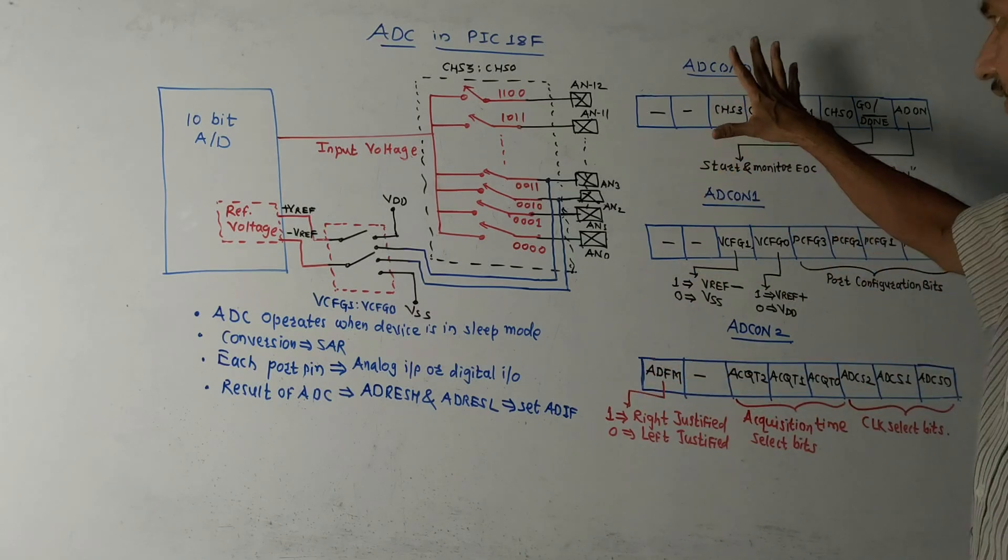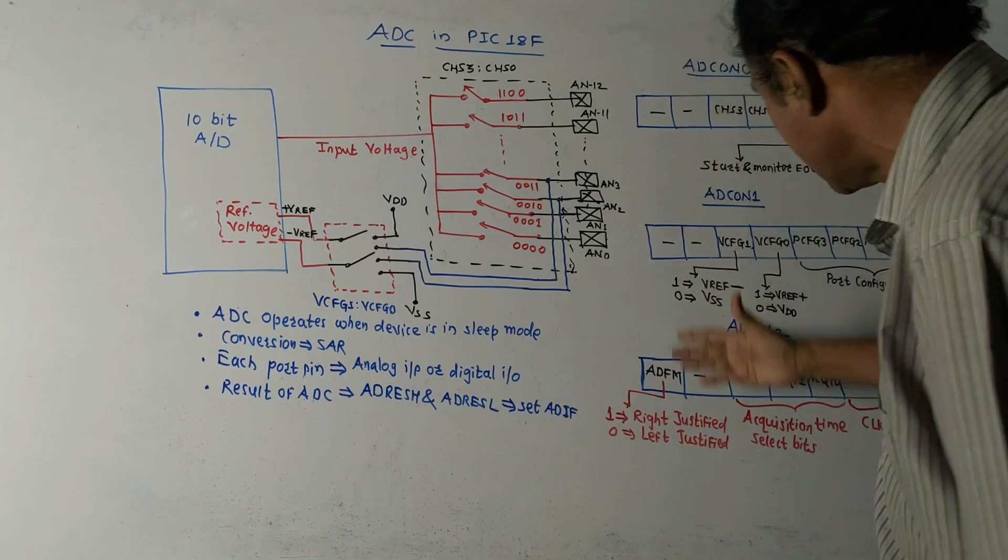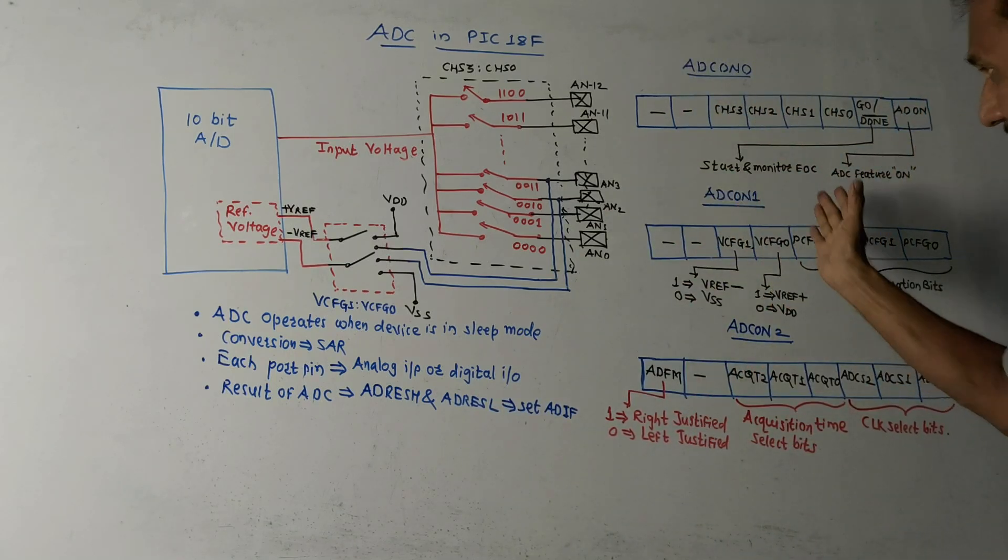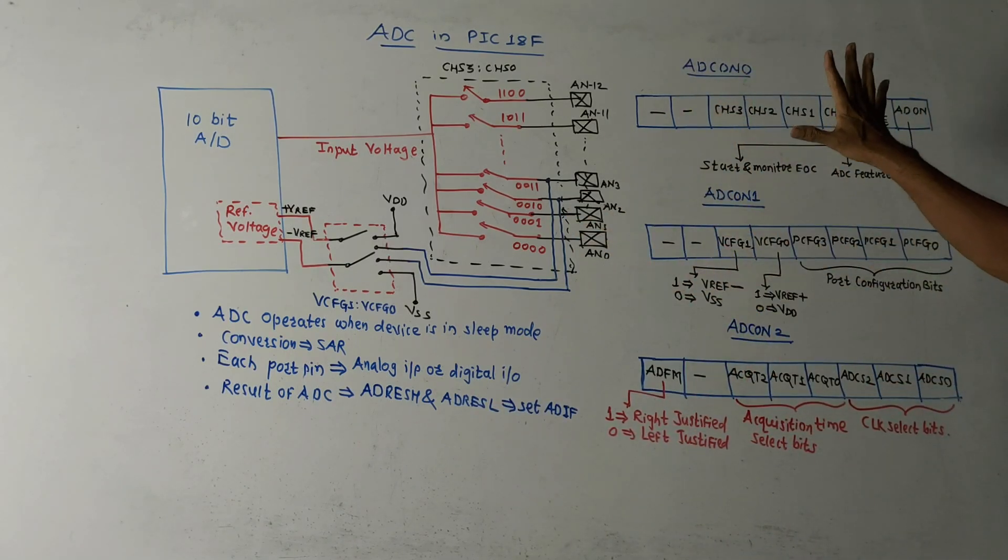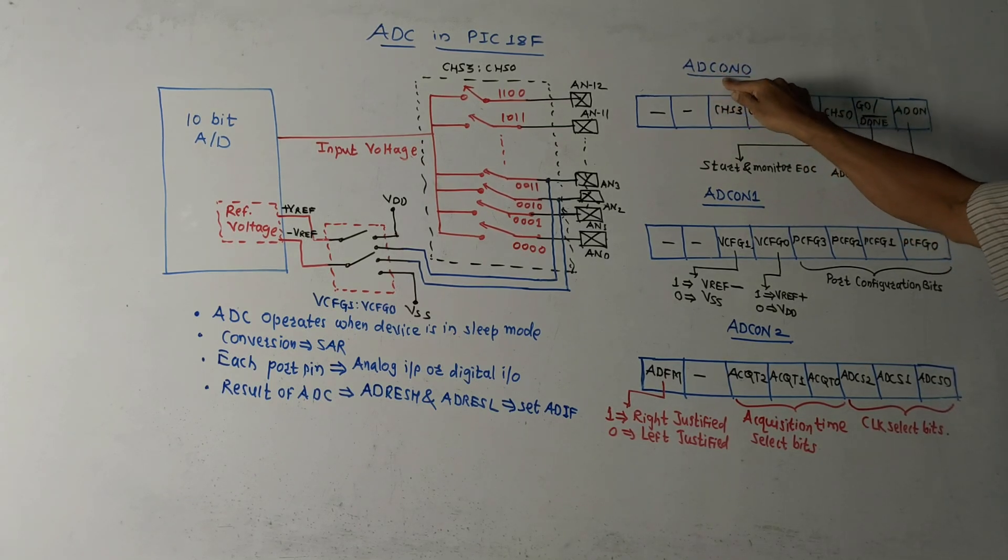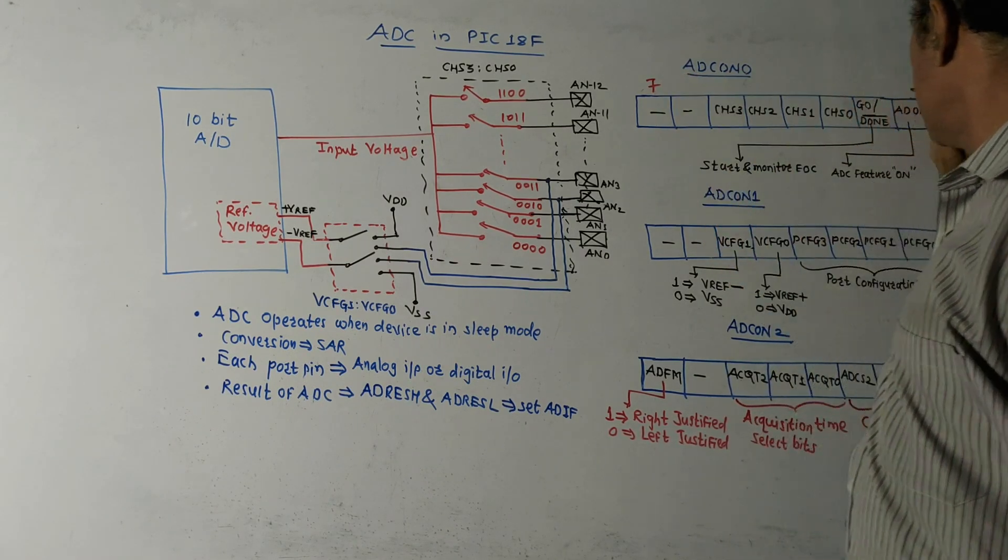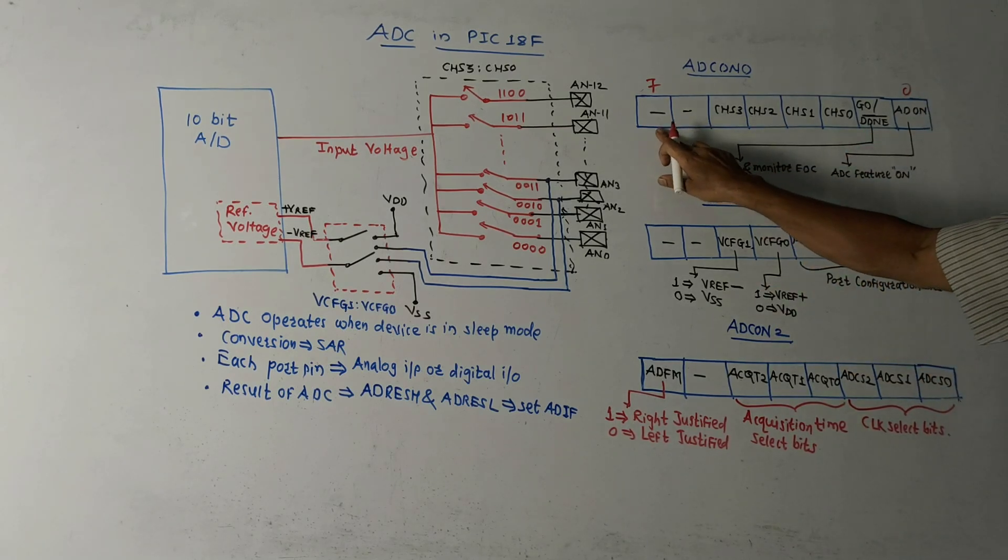Now let us discuss this control register. Your answer must include this control register, which is simple, and explanation is related to this control register. So first control register is analog to digital control register 0. These are the positions: this bit is bit number 7, this is bit number 0, total 8 bits are there. Bit number 7 and 6 are unused.